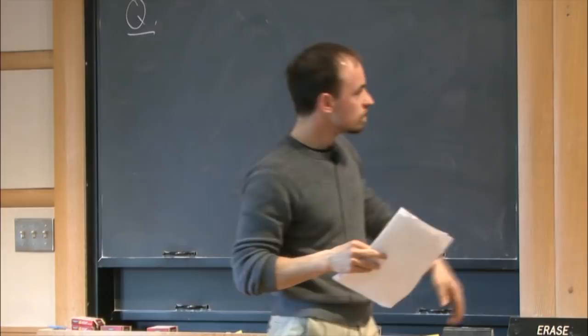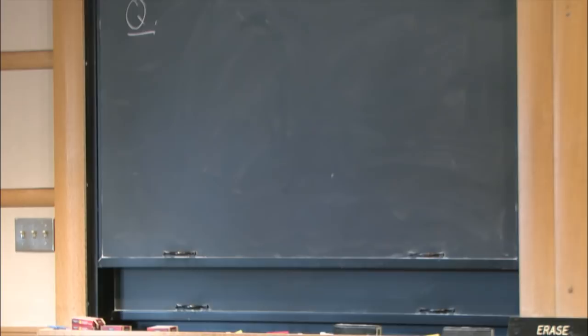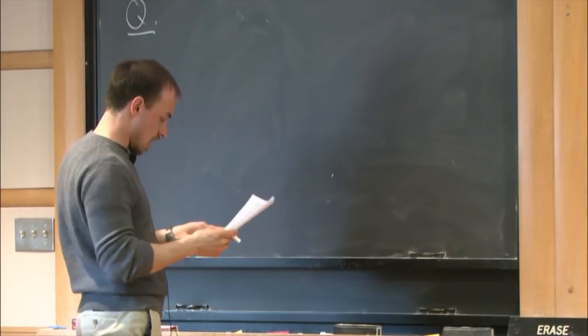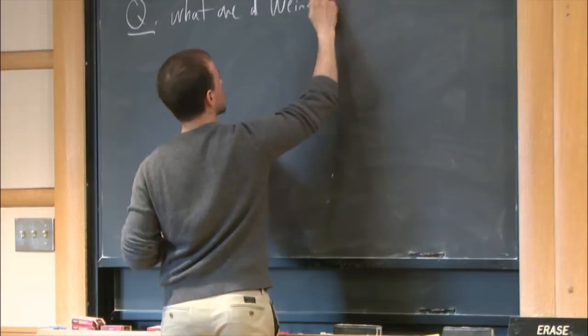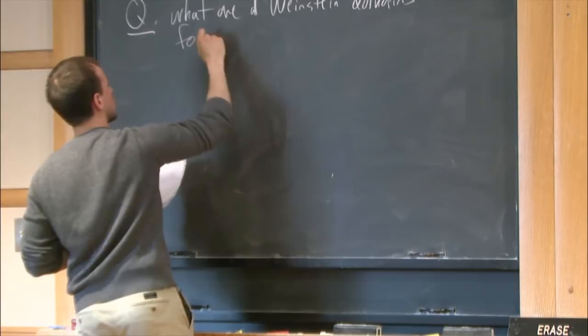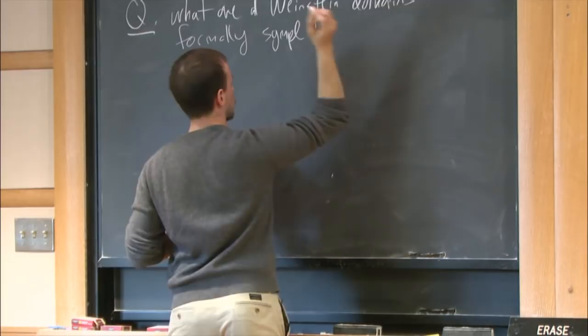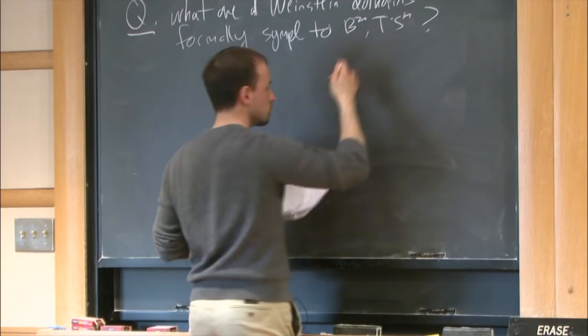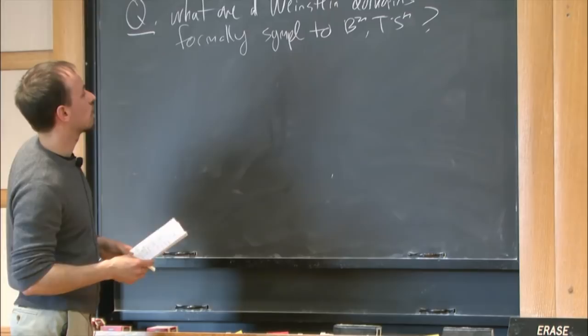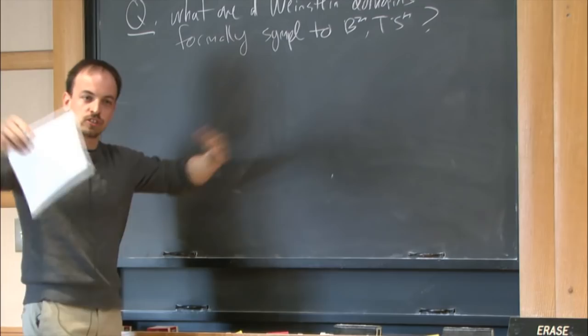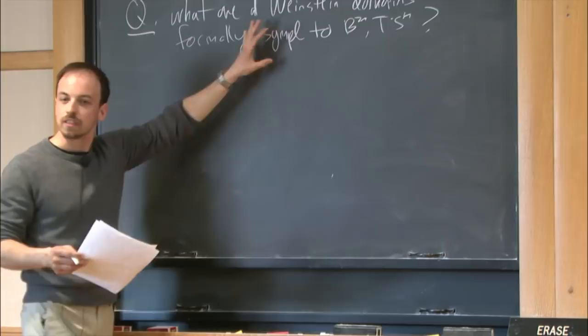Let me formulate the questions this leads to. We already see there are infinitely many exotic structures. If you take the standard cotangent bundle of the sphere and do a boundary connect sum with these, you get infinitely many. The classification question is: what are all Weinstein domains which are formally symplectomorphic to, say, the ball or the standard cotangent bundle of the sphere? We fix the underlying smooth data and ask what extra symplectic data can you get — essentially an infinite collection, but what kind, and is there a way to understand them?